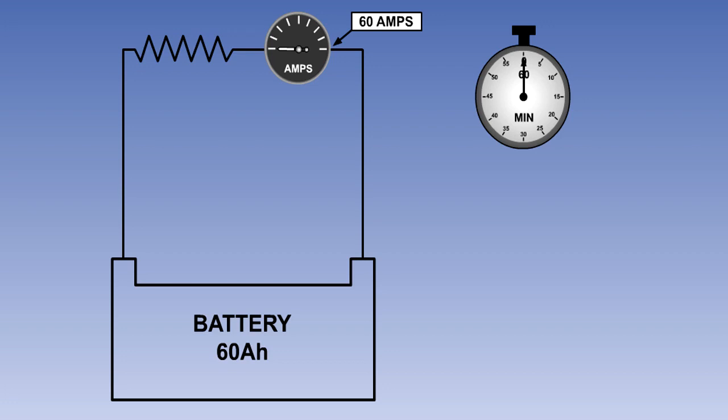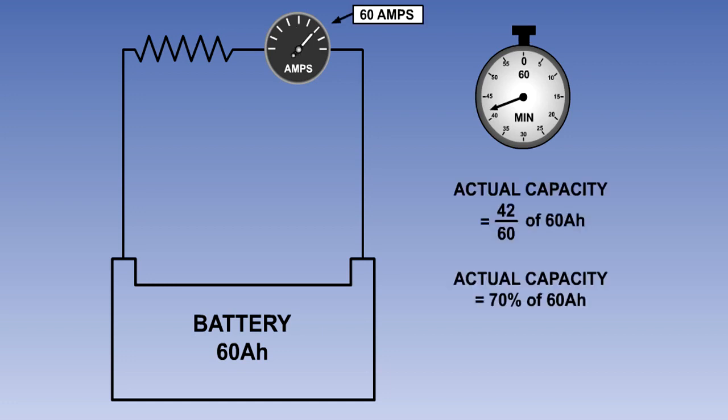Actual capacity is determined by the battery's deterioration in service. If a 60 ampere hour battery, when subjected to a 60 ampere load, lasts only 42 minutes, then the actual capacity is 42 60ths, or 70% of its rated capacity. In other words, the battery is only 70% efficient.